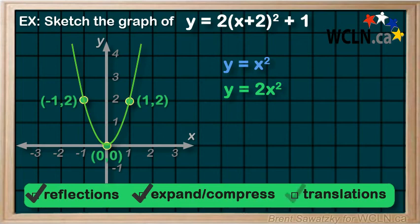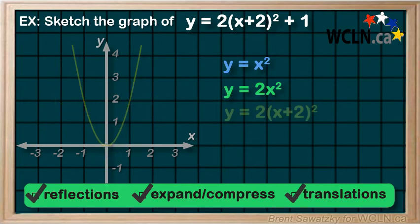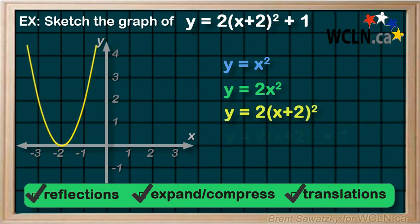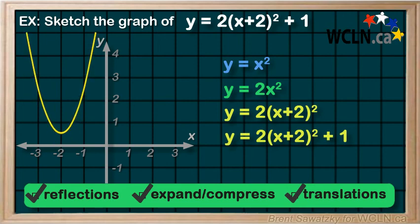Next, in our order of transformations, we have our translations. And we have our horizontal translation, and that's moving us 2 to the left. And then, our vertical translation involves everything moving up by 1.